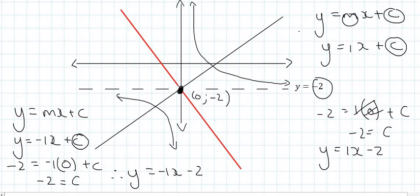Hyperbolas have two symmetry lines, one of them has a gradient of 1, and the other one has a gradient of minus 1.